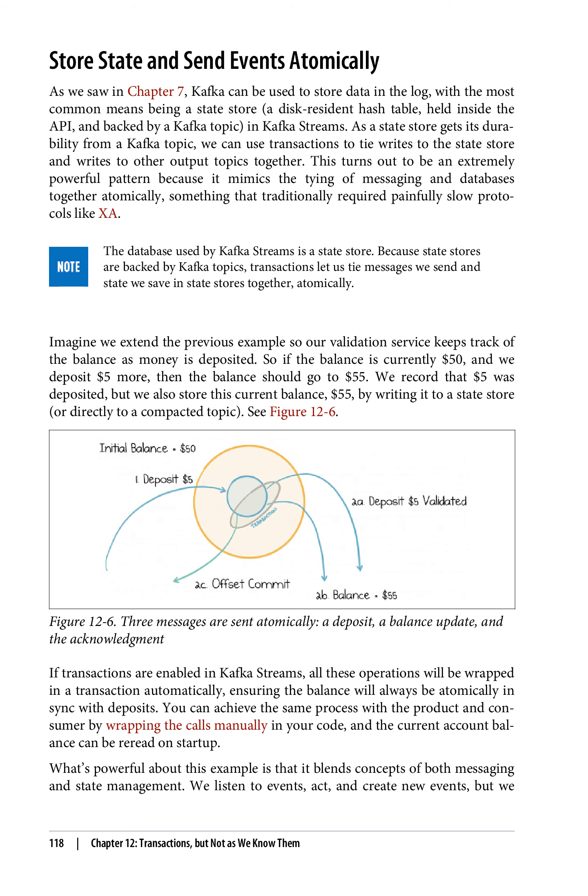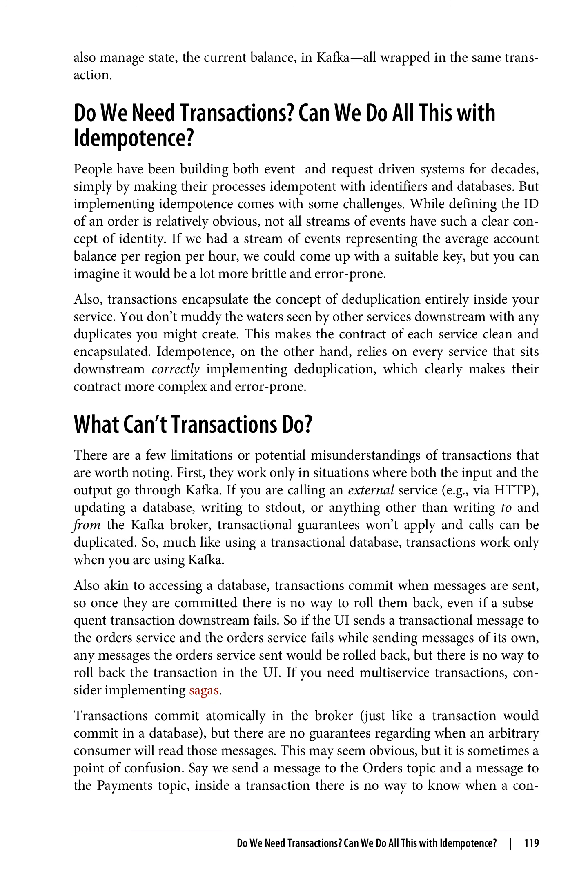Imagine we extend the previous example so our validation service keeps track of the balance as money is deposited. If the balance is currently $50 and we deposit $5 more, then the balance should go to $55. We record that $5 was deposited, but we also store this current balance — $55 — by writing it to a state store or directly to a compacted topic (figure 12-6). If transactions are enabled in Kafka Streams, all these operations will be wrapped in a transaction automatically, ensuring the balance will always be atomically in sync with deposits. You can achieve the same process with the producer and consumer by wrapping the calls manually in your code, and the current account balance can be re-read on startup. What's powerful about this example is that it blends concepts of both messaging and state management: we listen to events, act, and create new events, but we also manage state — the current balance — in Kafka, all wrapped in the same transaction.